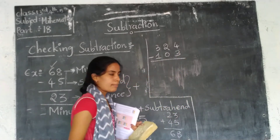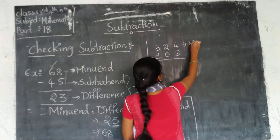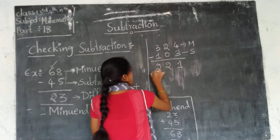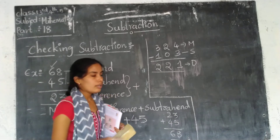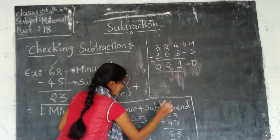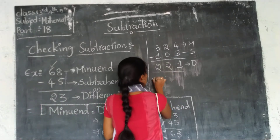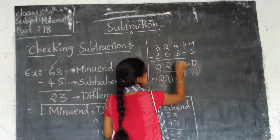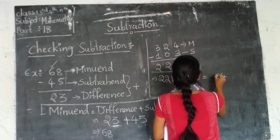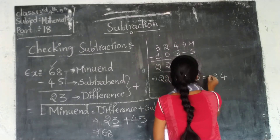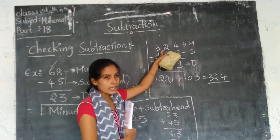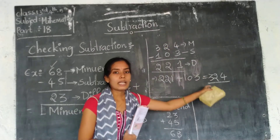Normal subtraction: the minuend minus subtrahend. 4 minus 3 is 1. 2 minus 0 is 2. 3 minus 1 is 2. So the difference is 221. Now applying the formula: minuend equals difference plus subtrahend, so 221 plus 103. 3 plus 1 is 4. 2 plus 0 is 2. 2 plus 1 is 3. The answer is 324. Yes, that matches the minuend, so the answer is correct.